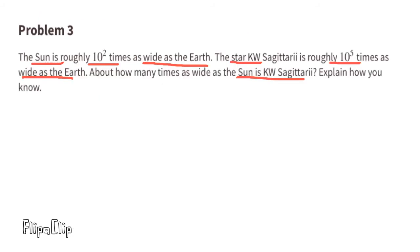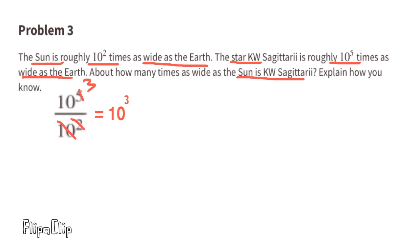Problem number 3. The sun is roughly 10 to the second power times as wide as the earth. The star KW Sagittary is roughly 10 to the power of 5 times as wide as the earth. About how many times as wide as the sun is KW Sagittary? KW Sagittary's width is 10 to the power of 5 times larger than the earth, and the sun is 10 to the power of 2 times larger. So 10 to the power of 5 divided by 10 to the power of 2 equals 10 to the power of 3, which is 1,000. KW Sagittary is 1,000 times wider than the sun.